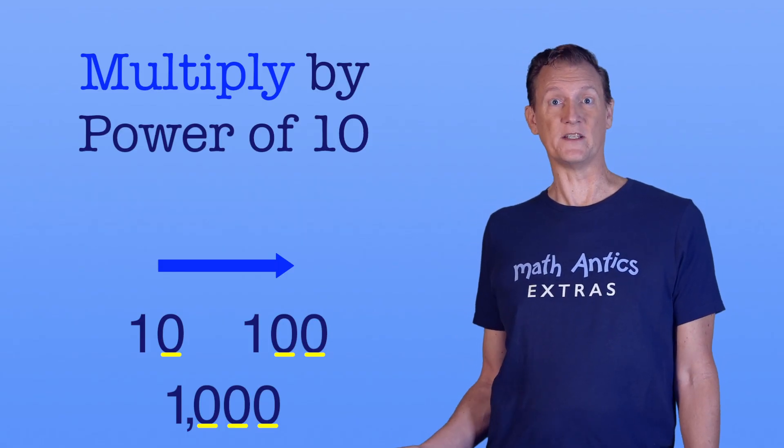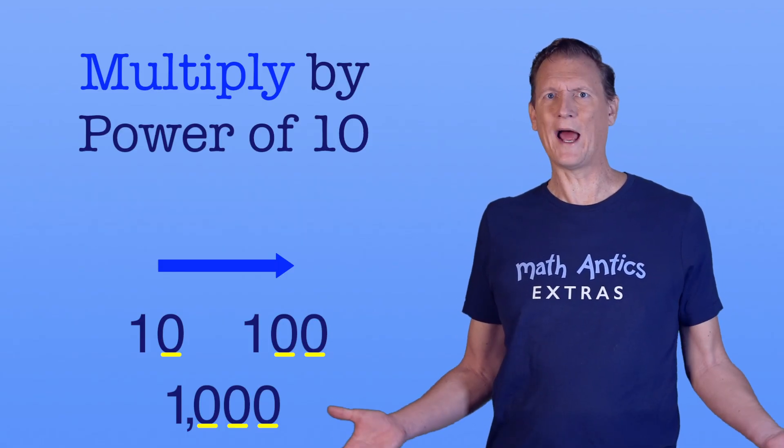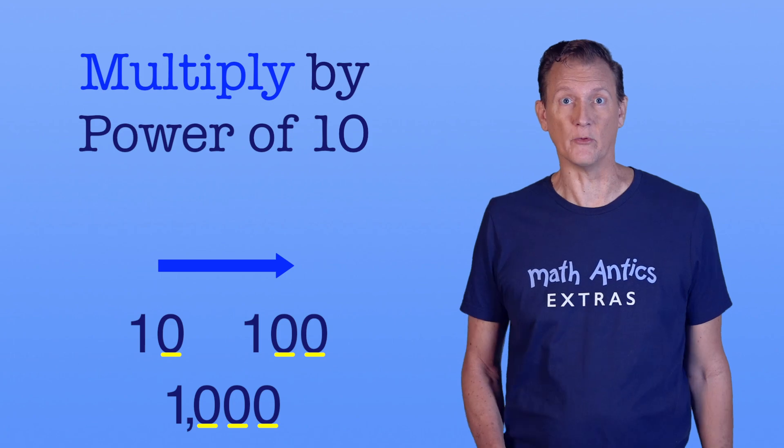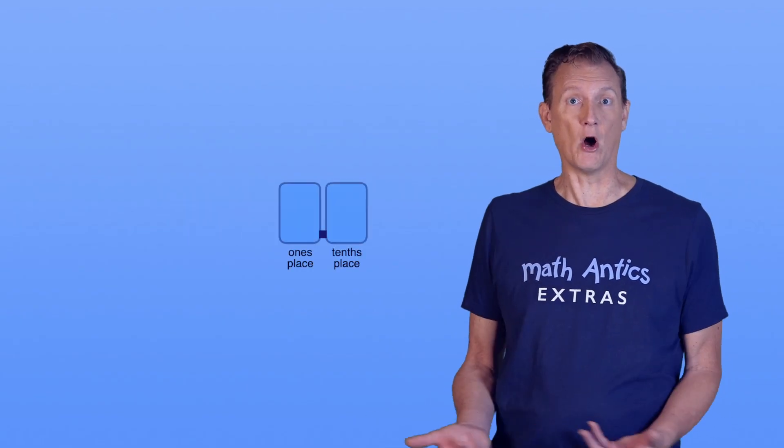But you don't normally show the number places when writing numbers. So how are you supposed to do this when doing it on your own? Well, you know how the decimal point is always between the ones place and the tenths place? You can just shift the decimal point to shift all the number places.